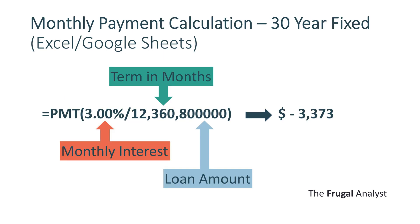You can calculate the mortgage payment by using Excel or Google Sheets with the payment formula, inputting the monthly interest rate — which is the annual rate divided by 12 — the term in months (for 30 years, that's 30 times 12, which equals 360), and the loan amount of $800,000.